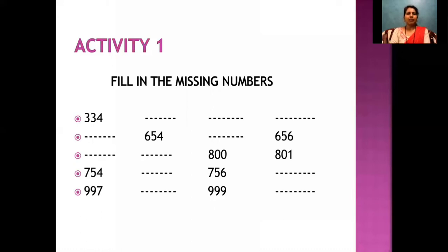We come to the third one. You have to write two numbers before 800 and the number that comes after 800 is 801. The fourth number is 754, so a number after 754 and then again a number after 756. And the last number for this activity, 997. So we will write a number after 997 and a number after 999.